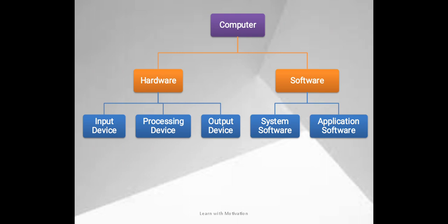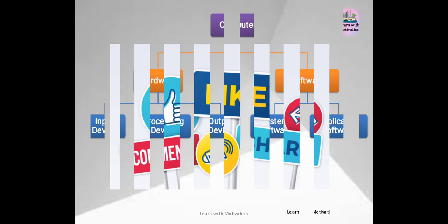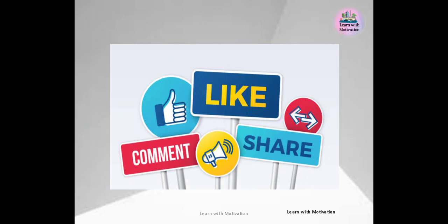Now let's revise the topic. Computer can be classified into two categories: hardware and software. Hardware can be classified into three categories: input device, processing device, and output device. And software can be classified into two categories: system software and application software. Hope you understood the topic. Thank you.